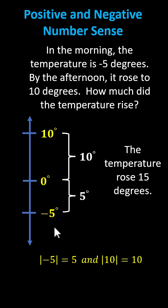We could have also determined the temperature rise by adding the absolute values of the two temperatures, since they're on opposite sides of zero. The absolute value of negative five plus the absolute value of 10 equals 15. I hope you found this helpful.